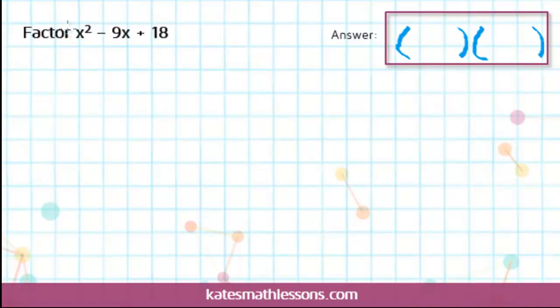The first thing you want to do is look at your first term here, this x squared term, and figure out what should we put in these first two spots so that when we multiply them, they come out to this first term here. So since it's just a simple x squared, that tells us we need just an x and an x.